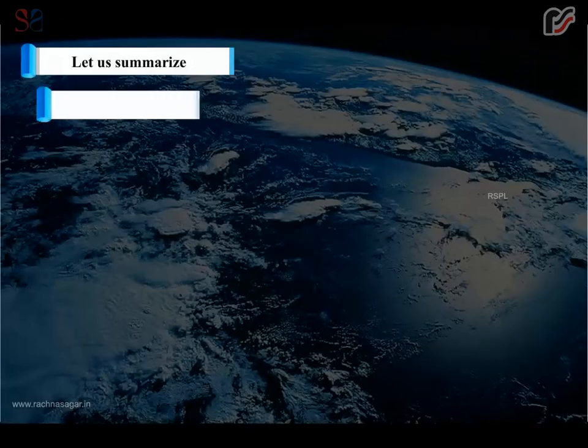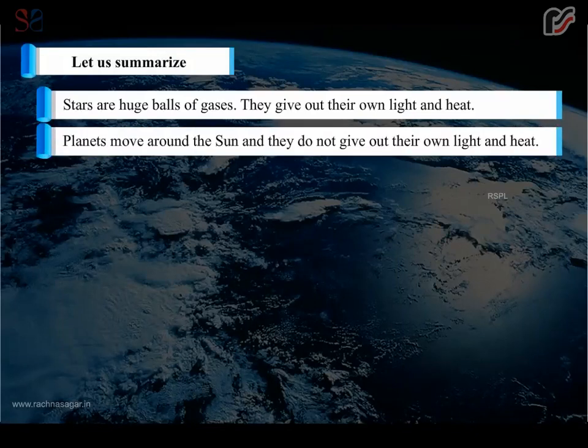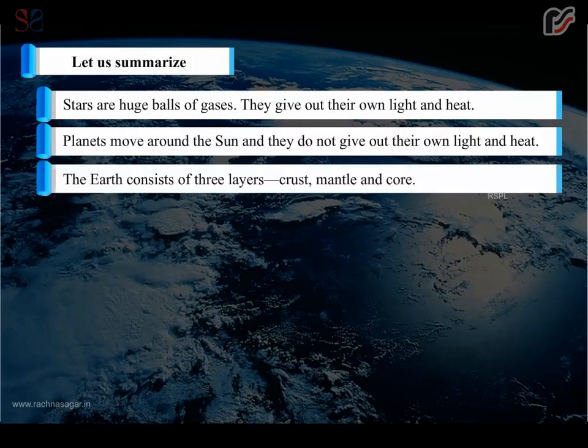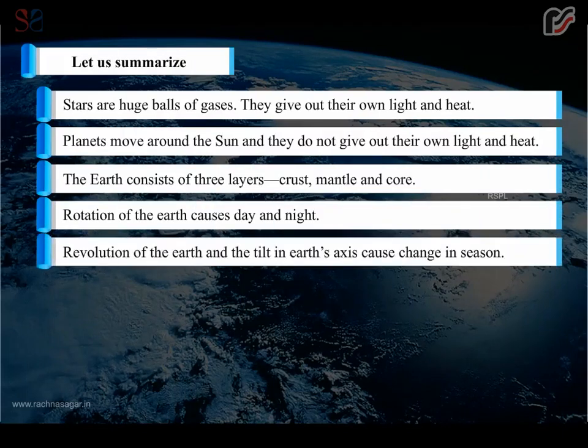Let us summarize. Stars are huge balls of gases. They give out their own light and heat. Planets move around the Sun, and they do not give out their own light and heat. The Earth consists of three layers: crust, mantle, and core. Rotation of the Earth causes day and night. Revolution of the Earth and the tilt in Earth's axis cause change in seasons.